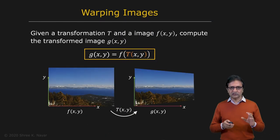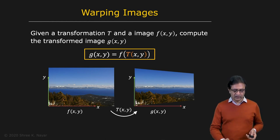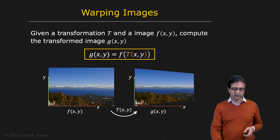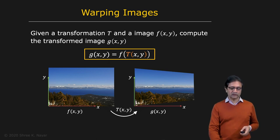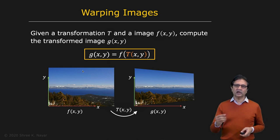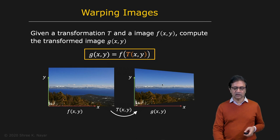Turns out there are a few technical issues that one needs to address in order to ensure that the final output is going to be of high quality. The first one is related to applying your geometric transformation, or what we call warping. So let's say there's an image F and you want to apply a geometric transformation T to it to get your transformed image G. It seems like you can just go to each pixel in F, apply the transformation T, and write the brightness value or color at that location in G.